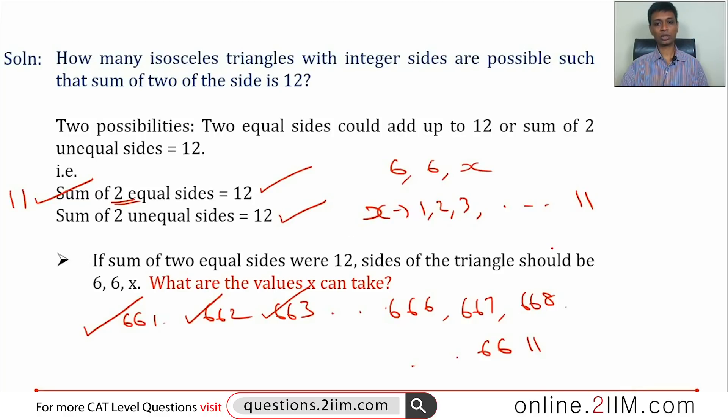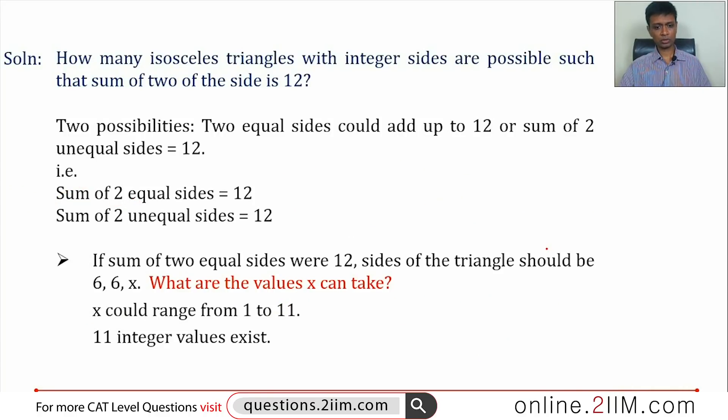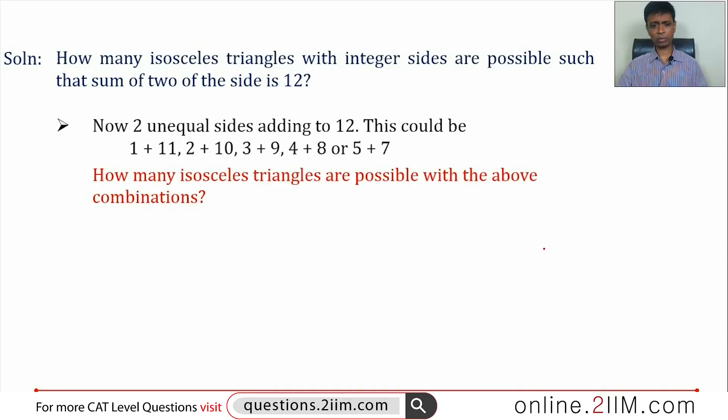Now, let's go to sum of the two unequal sides being 12. The unequal sides could be 1 and 11, 2 and 10, 3 and 9, 4 and 8, 5 and 7. We're talking integers here. We cannot have anything apart from these.